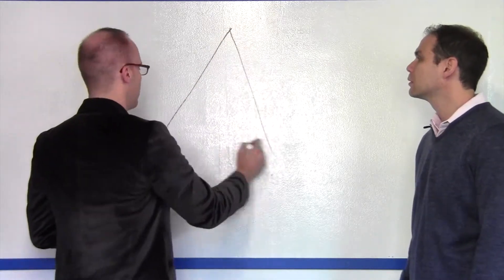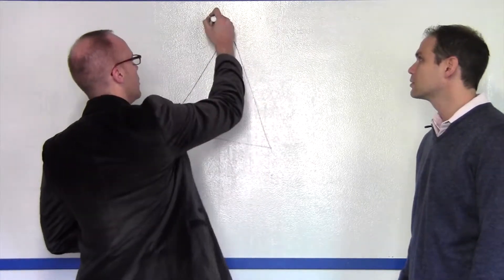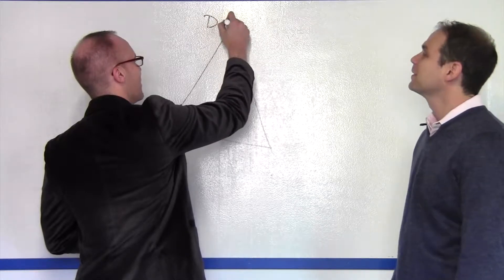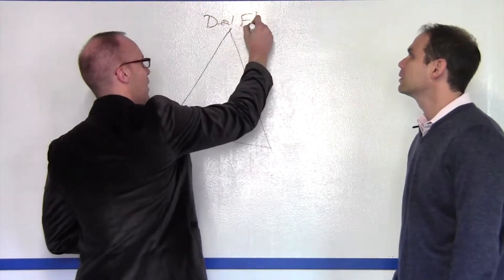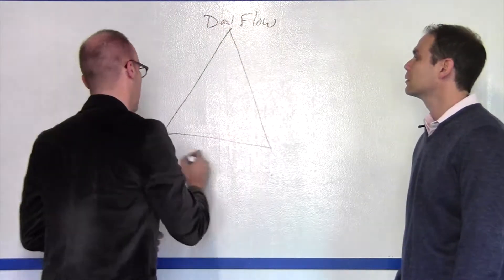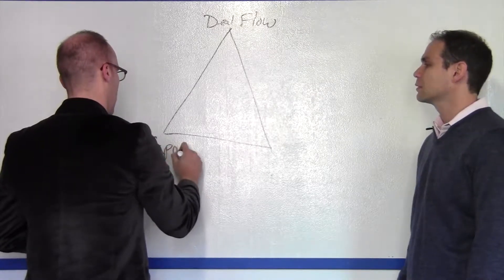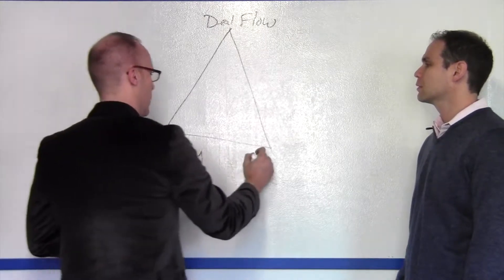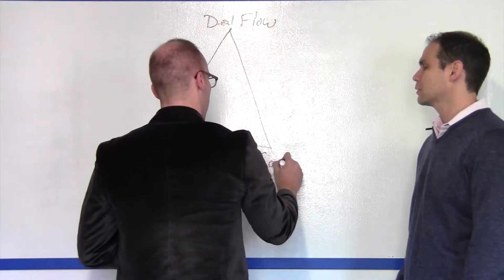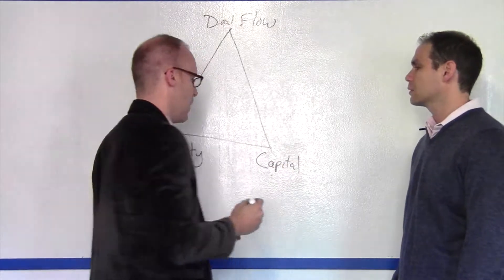Draw a little triangle here. Symmetrical. Exactly. So we've got deal flow, capacity, and then capital.